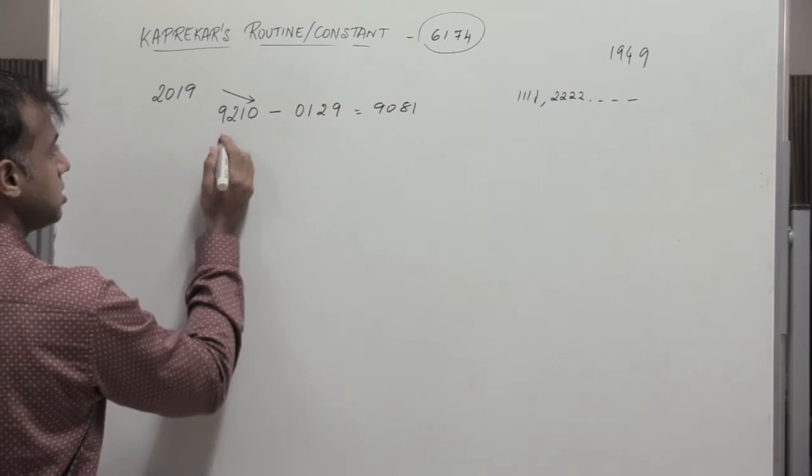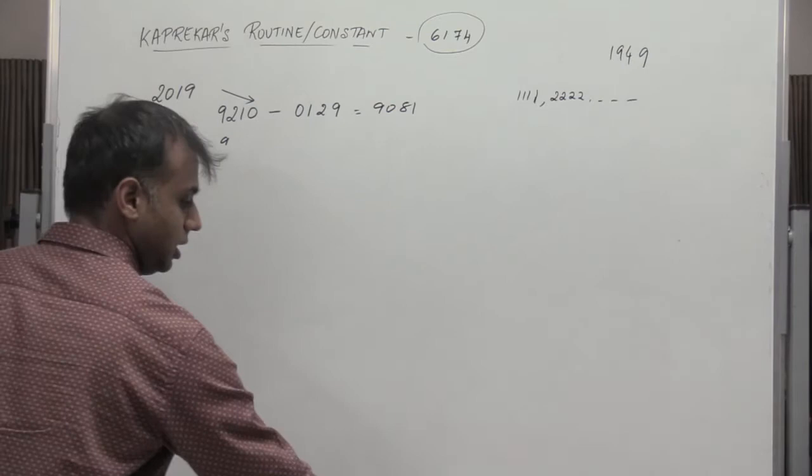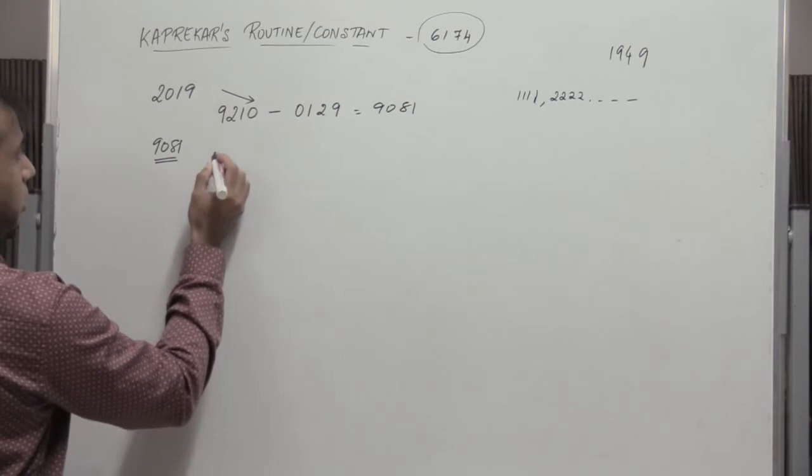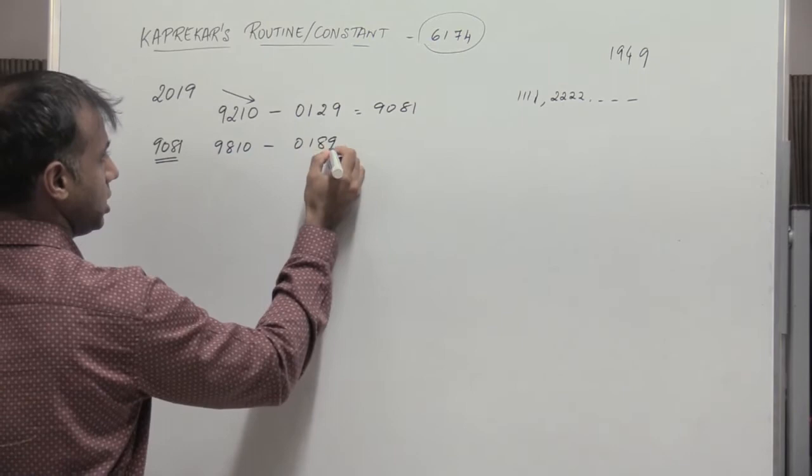Now consider this number 9081. Again write these four digits in the descending order minus these four digits in the ascending order. So I have 9810 minus 0189. So when I perform subtraction, I get 9621.